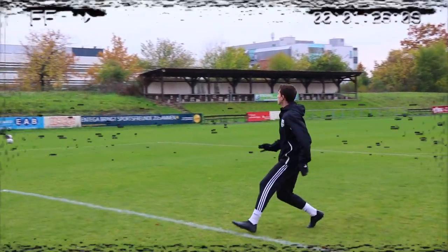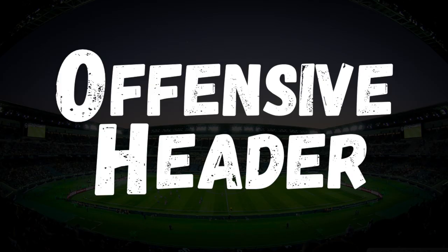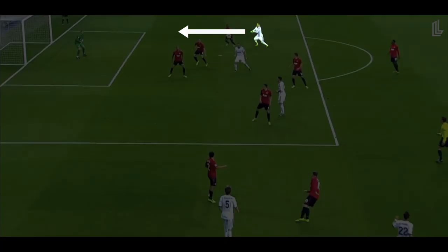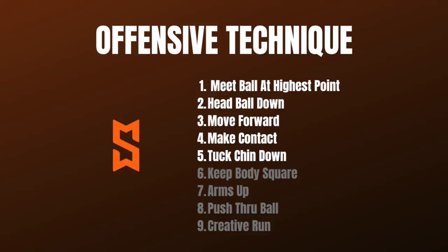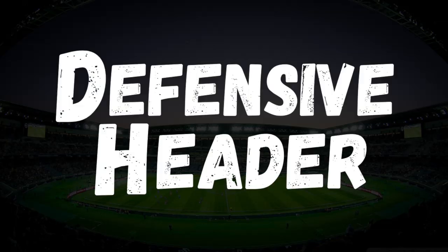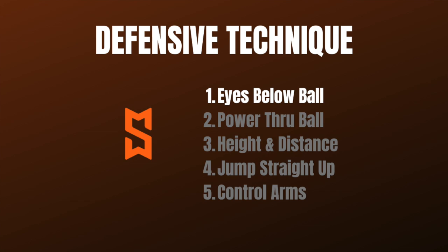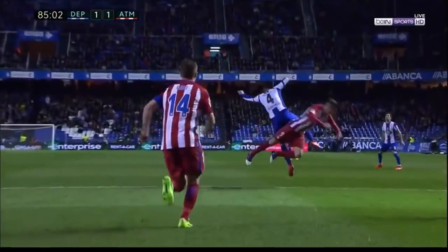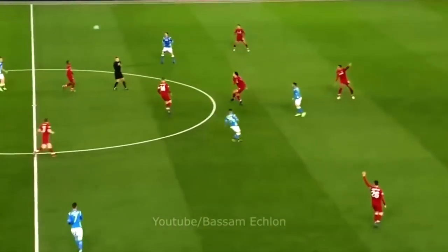Key takeaways for the offensive header: meet the ball at the highest point, coming over the top to head it down. Make sure you're moving toward the ball, lunging forward rather than staying still. Tuck your chin down, keep your body square on goal, arms up to protect yourself, push through the ball, and try to be unpredictable in the box with your run. For defensive headers: keep your eyes below the ball so your head is moving upwards on contact, power up and through the ball for height and distance, go straight up not over the opponent, and don't flare your arms out.